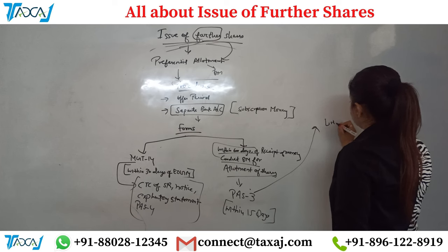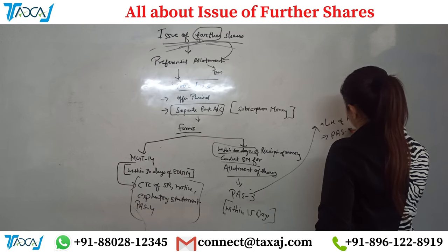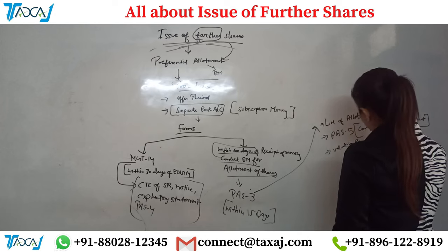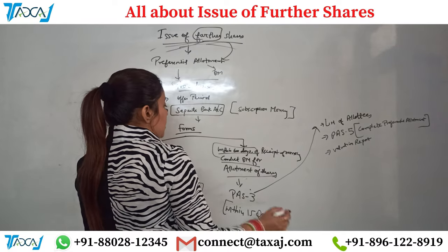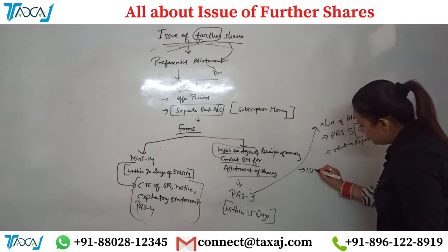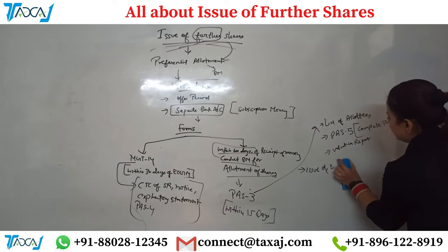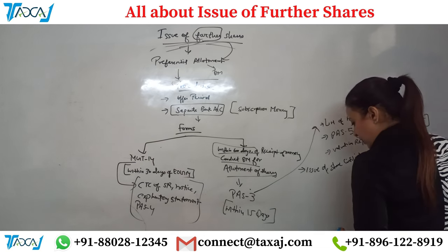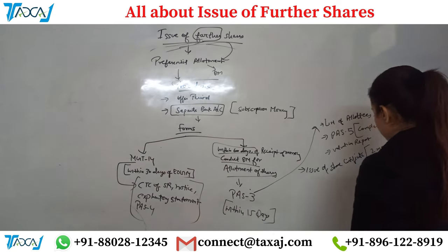The attachments of Form PAS-3 include the final list of allottees, Form PAS-5 containing the complete preferential allotment offer details, and the valuation report. Once the money is received, the board meeting is held, shares are allotted, and PAS-3 is filed within 15 days. The last step is the issue of share certificates — shareholders have paid money and in return they need share certificates, so the company must issue share certificates within two months of allotment.